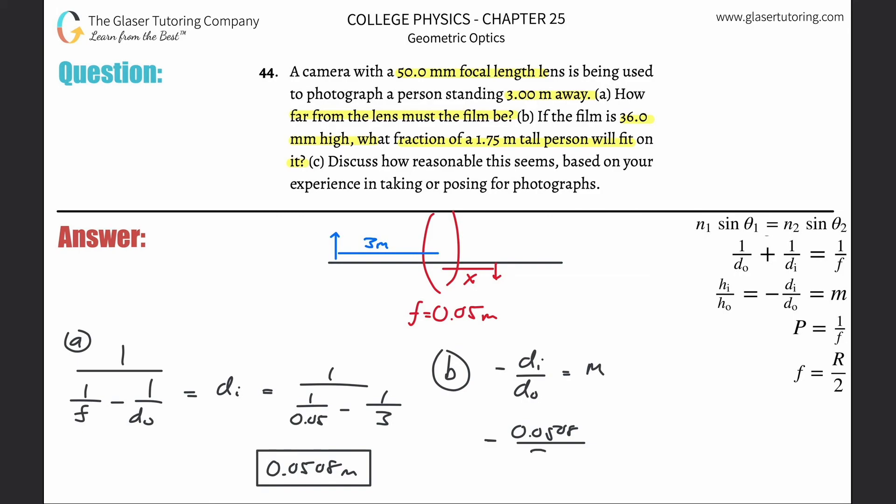So keep that in mind. Divided by then the object distance of 3 meters. And that's going to be equal to then the magnification. So let's calculate that. It's negative...